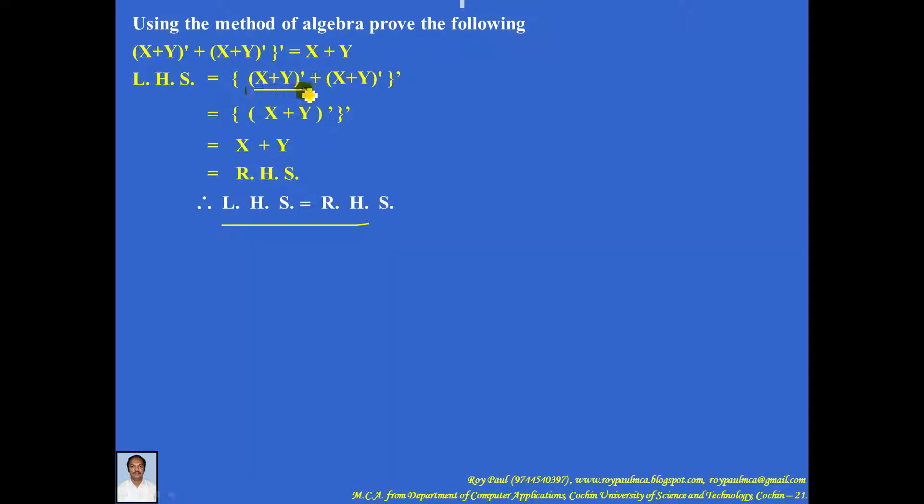So kindly make a note of this one. Here if you apply idempotency rule, the proof is easy. So X plus Y complement plus X plus Y complement. That is one X plus Y complement. Now involution law. A complement the whole complement is A. So X plus Y complement the whole complement is X plus Y and RHS.